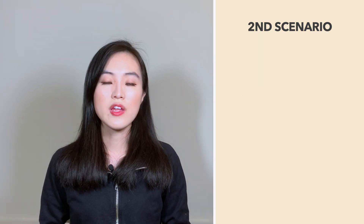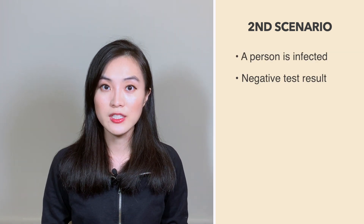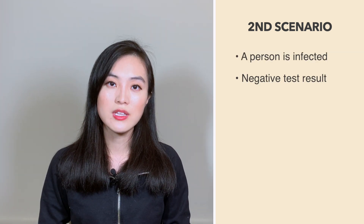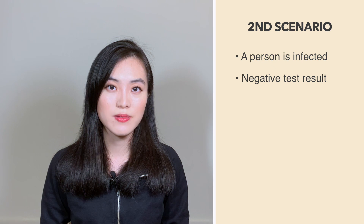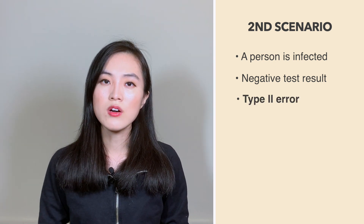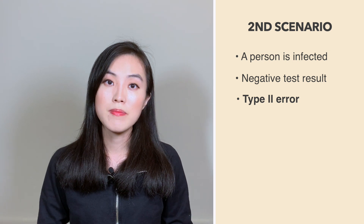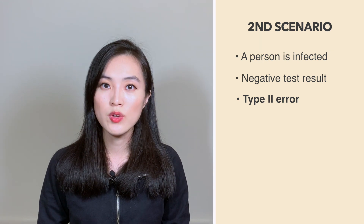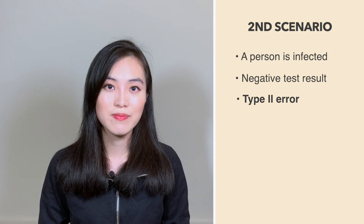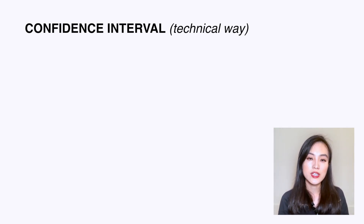The third scenario is that a person is indeed infected but the test result tells us they're not — this is a type 2 error. It is also very bad because the person may miss the best timing to get the treatment they really need.